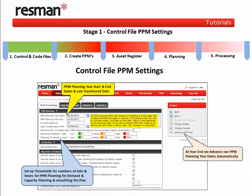The control file opens in the Work Processing tab, and this is where your PPM planning year start and end dates are located. Whilst you could set up a PPM planning year between any range of dates, the system has been designed to conform to an ISO-compliant PPM year, and ResMan support staff can give you further details on this if required.